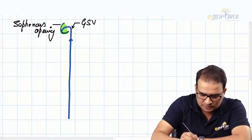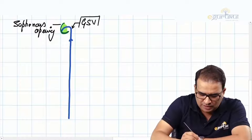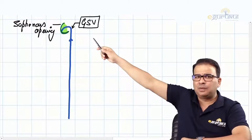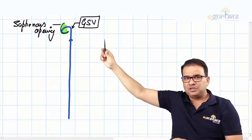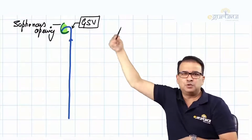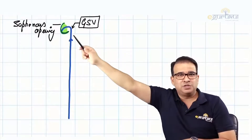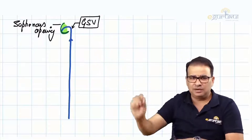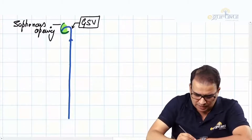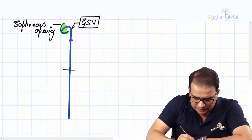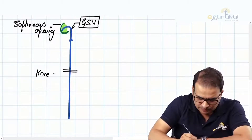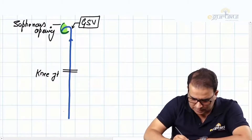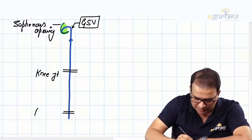I don't need to tell you the tributaries of the great saphenous vein in the upper part - you already know: veins coming from three different directions: superficial external pudendal, superficial epigastric, and superficial circumflex iliac. We've already done that portion. Now let's mark the knee joint region and the ankle joint.